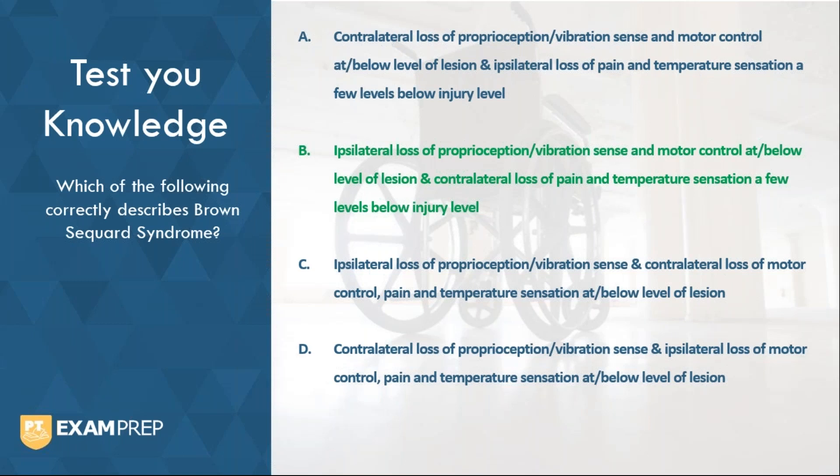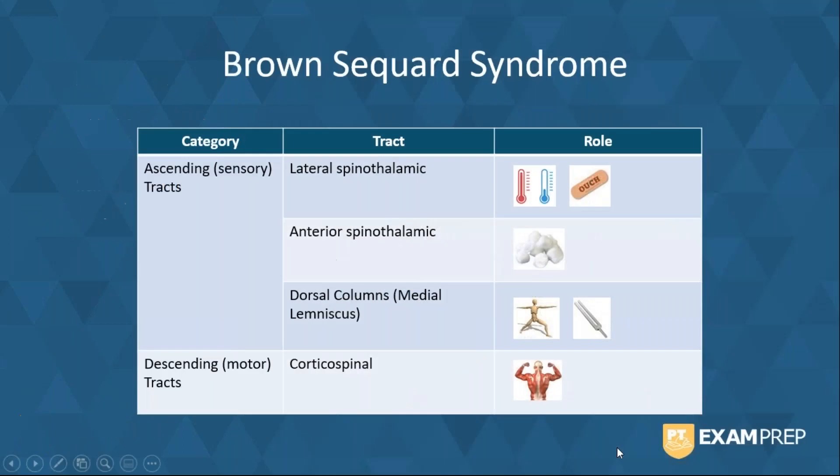Alright, hopefully you chose B. The correct answer is B. Brown-Séquard is described as ipsilateral loss of proprioception and vibration sense, ipsilateral loss of motor control, and contralateral loss of pain and temperature sensation. Now the cause of this pattern of loss is due to the spinal tracts that are affected.